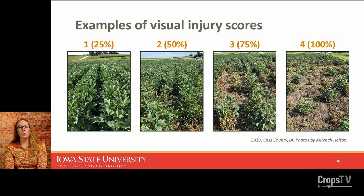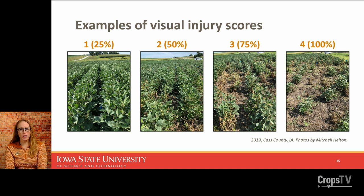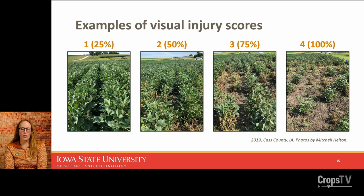Here's an example of visual scores on the zero-to-four scale: a score of one is at least 25% impacted plants, up to a score of four at close to 100%. Depending on timing of infestation and severity, if you have plant loss — especially later in the season — you can get a lot of weeds entering that empty space. Weed control has been particularly frustrating for farmers impacted by soybean gall midge, as large weeds form at the end of the season when many farmers have stopped their herbicide program, leading to heavy weed pressure the following growing season.